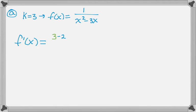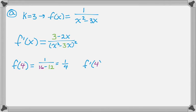So f prime of x, if k is 3, ends up being 3 minus 2x over (x squared minus 3x) squared. So I need to know the y value, so I need to know f(4). By plugging in, I get f(4) is 1/4. I need to know f prime of 4 by plugging in, which gives me negative 5/16, and then point slope my line.